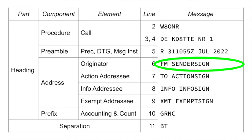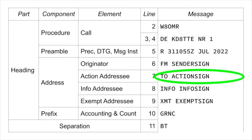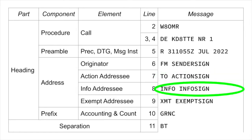This is the originator of the message — it's mandatory. Line 7 is the action addressee. Again, it's a sign: a call sign, a tactical call sign, a position, a name — whoever is meant to act on the message, if any action is required, goes here. Line 8 is the info addressee. It's not someone who is supposed to act on it; it's for their information or awareness. It is still, however, an addressee, so it's going to be a call sign, a position, or something similar.